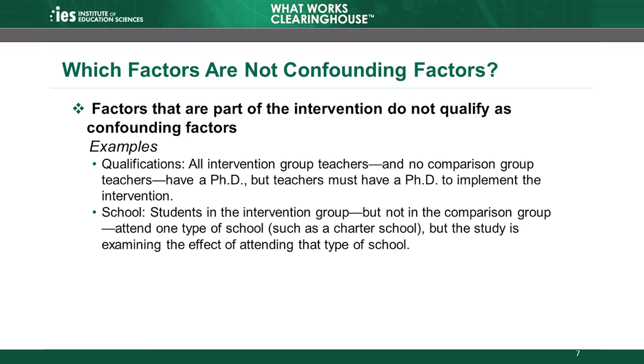The WWC considers characteristics like teacher qualifications or time periods to be confounding factors when there is no overlap in the characteristic between the intervention and comparison groups. In the example where all intervention teachers have a PhD, if even one comparison teacher also has a PhD, the WWC would not consider the PhD qualification to be a confounding factor. It is important to note that some situations similar to those we just discussed may not always be confounding factors. Based on the WWC's definition, they only qualify as confounding factors when they are not part of the intervention. For example, an intervention might require teachers to have certain qualifications to implement it, or the study might be examining the effect of attending a specific type of school, such as a charter school. In these cases, the apparent confounding factor is actually part of the intervention the study is testing, and the WWC would not consider the difference to be a confounding factor.